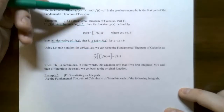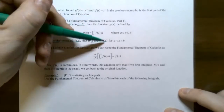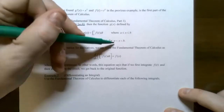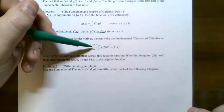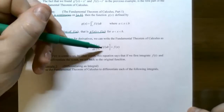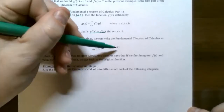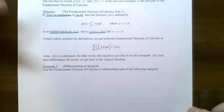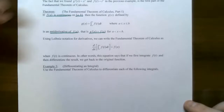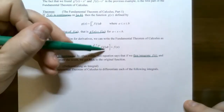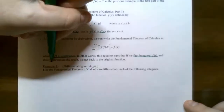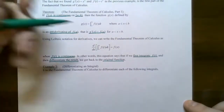So g prime of x is x squared, and the integrand f of t was t squared — evaluated at x, it's also x squared. This gives us the first part of the Fundamental Theorem of Calculus: if f is continuous on a closed interval a to b, and g of x is the definite integral from a to x of f of t dt, then g prime of x equals f of x. In other words, differentiating the integral returns the integrand evaluated at the upper limit of integration.